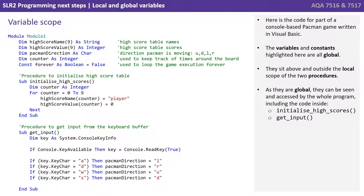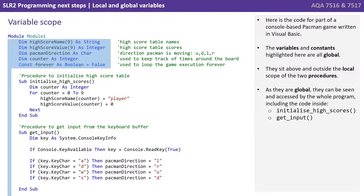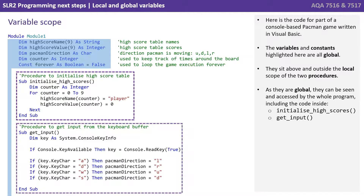Here is the code for part of a console-based Pac-Man game written in Visual Basic. The variables and constants highlighted here are all globals. They sit above and outside the local scope of the two procedures shown. As they're global, they can be seen and accessed by the whole program, including the code inside the procedures: initialize high scores and get input.